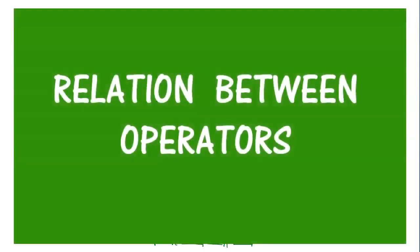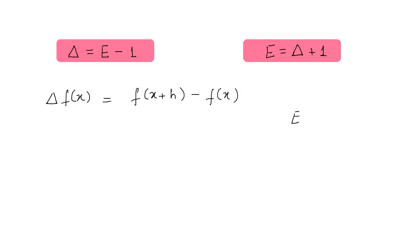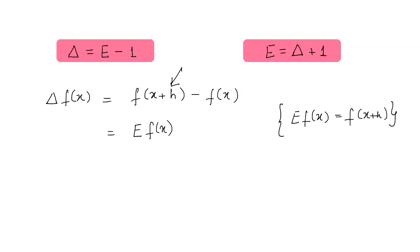Let us now move on to the different types of relations between these operators. Our first relation is between the shift operator E and the forward difference operator delta: delta equals E minus 1. To prove this, by the definition of delta, we know that delta f(x) = f(x + h) - f(x). Also, we know that E f(x) = f(x + h). So in place of f(x + h), we can write E f(x) - f(x).